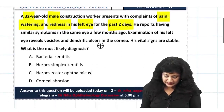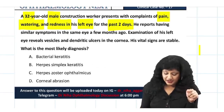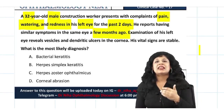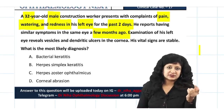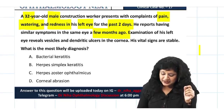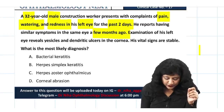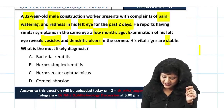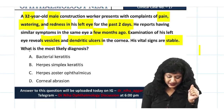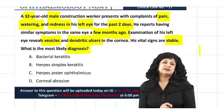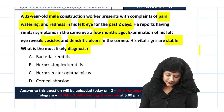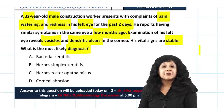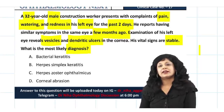He reports having similar symptoms in the same eye a few months ago — meaning this condition can cause recurrent lesions. Examination of that eye also reveals vesicles and dendritic ulcers in the cornea. The vitals are stable. The options given are: bacterial keratitis, herpes simplex keratitis, herpes zoster ophthalmicus, or corneal ulcers.